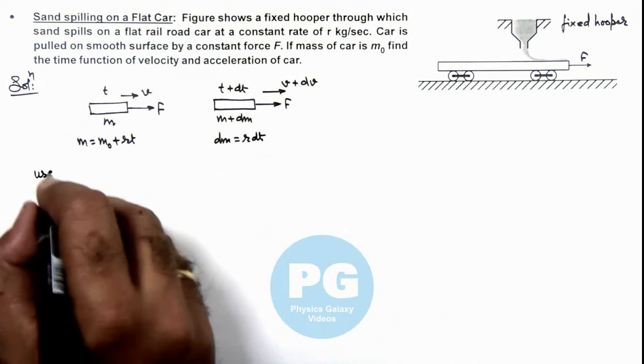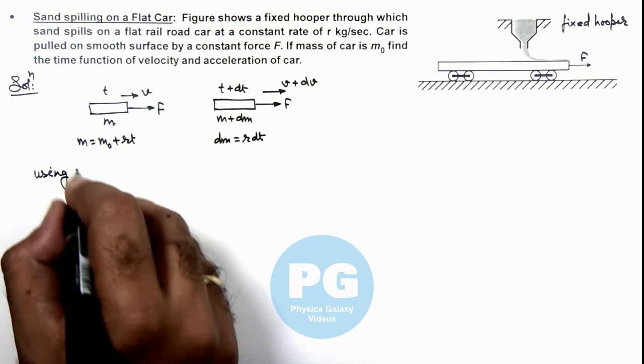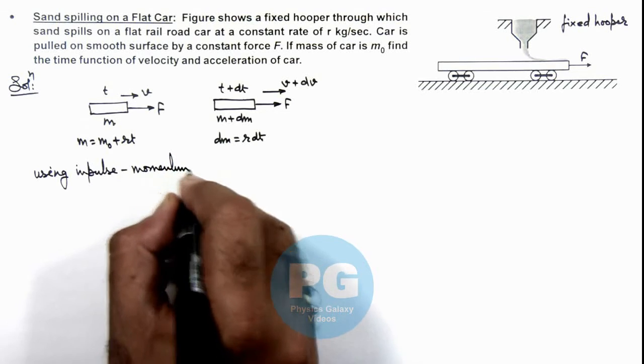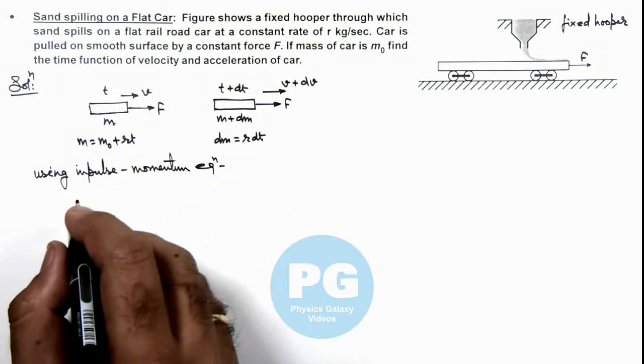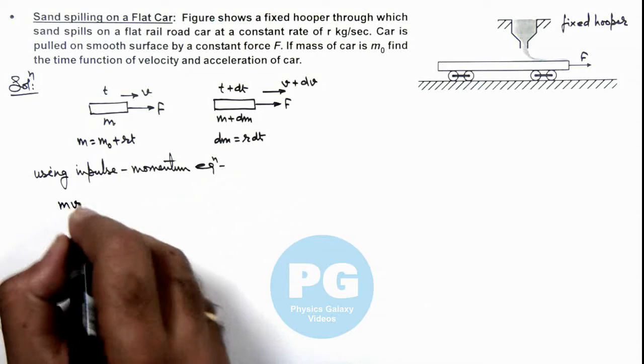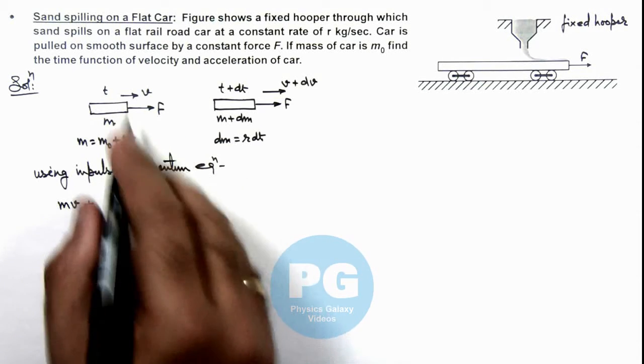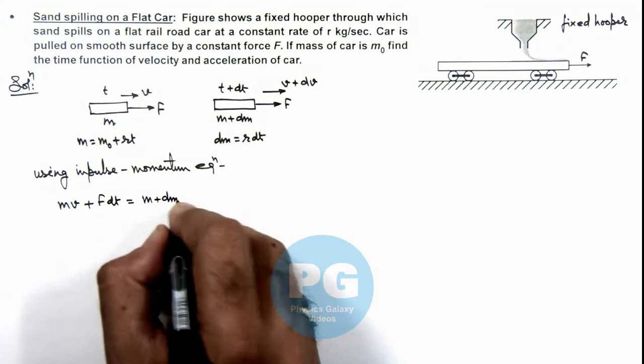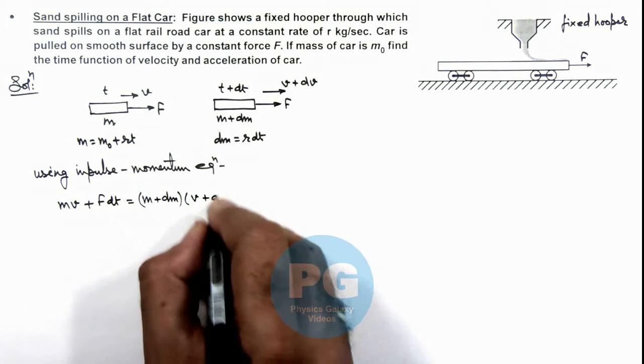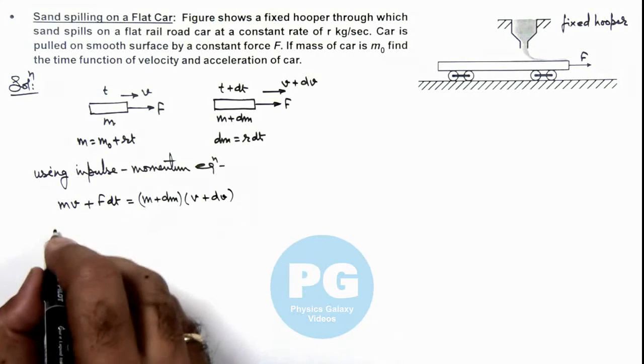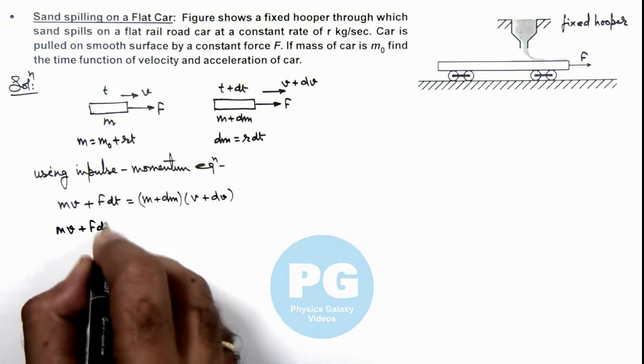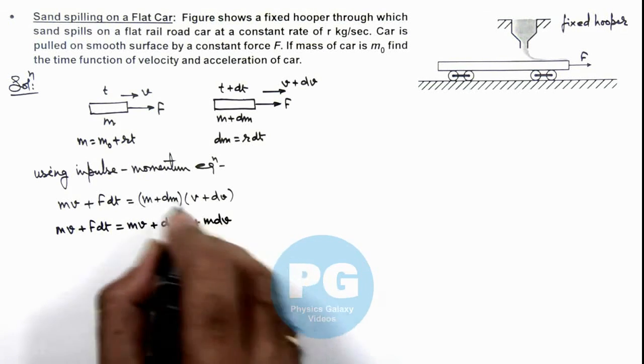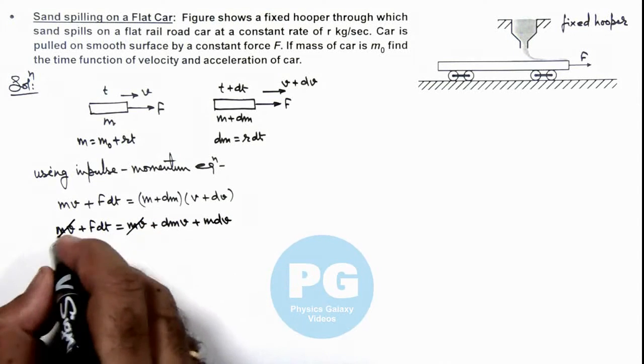Using impulse momentum equation, we can write the initial momentum of system was mv plus the impulse imparted by the forces F dt is equal to the final momentum as (m plus dm) multiplied by (v plus dv). Now if you open this equation it gives mv plus F dt equals mv plus dm v plus m dv. We can neglect the product of elemental quantities and mv gets cancelled out.